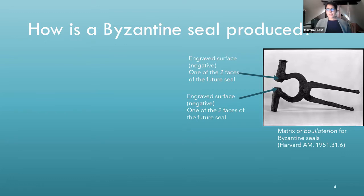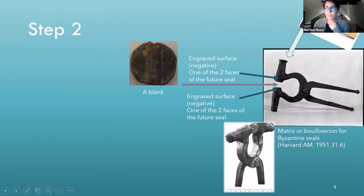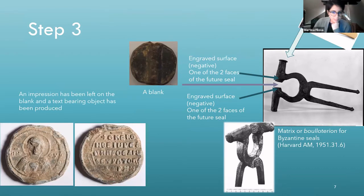So we can only imagine how many Voloteria we lost, if we see that the ratio is 6 to 80,000. We have this tool which has hammer-like projections engraved in negative, and we put a blank in the space between the two projections, and then we strike it with a hammer. By means of a strike, we produce a very nice seal, which bears the impression of the negative-engraved Voloterion.